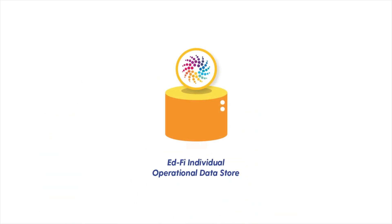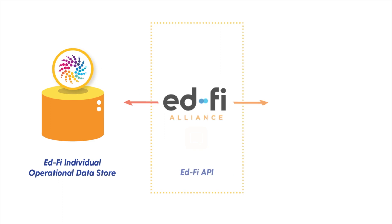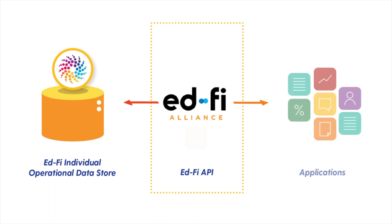Structurally, EDFI has two components. There's the EDFI individual ODS, a secure platform where all your information is stored. Then there's the EDFI API, which is an interface to create, read, and update data stored in the ODS. The API is the key to building user-centric applications to put the right data in front of the right people.